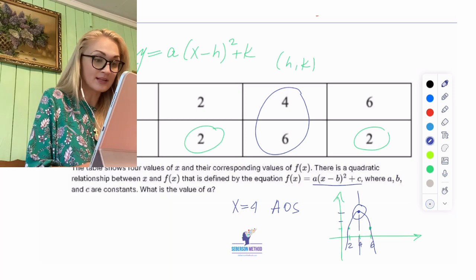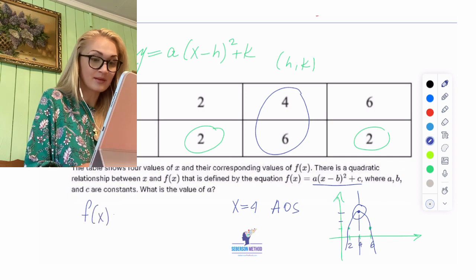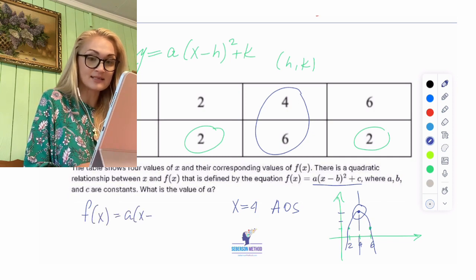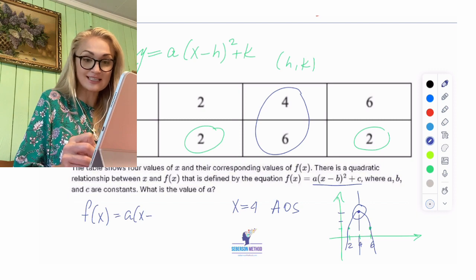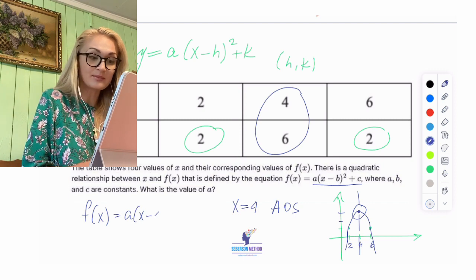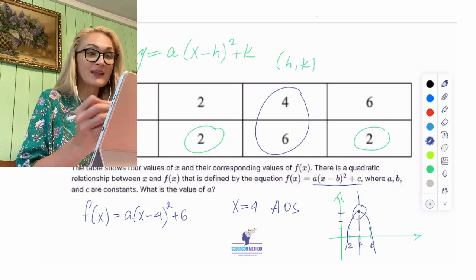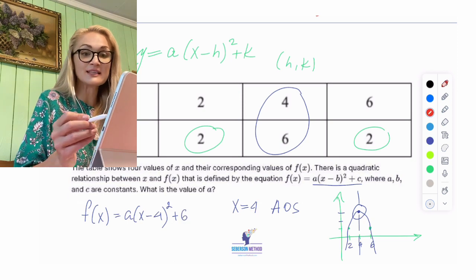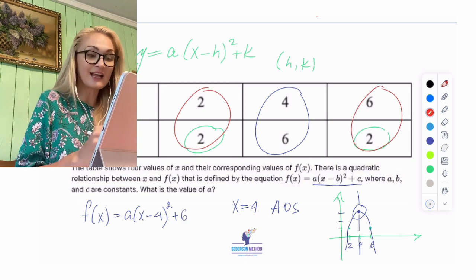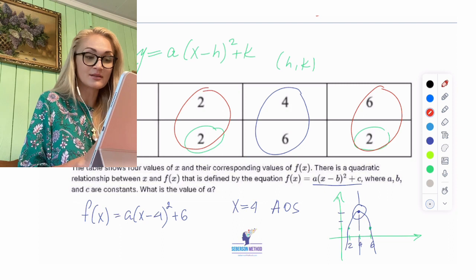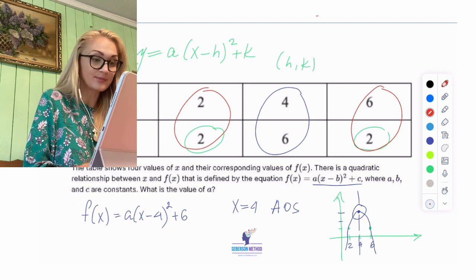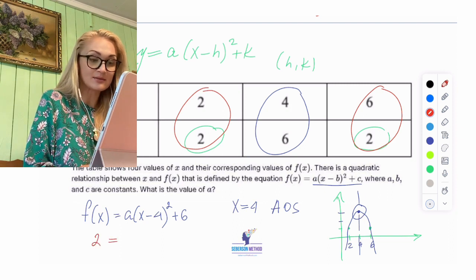So I can rewrite this as f(x) equals a(x minus 4) squared plus 6 — my x-coordinate of the vertex is 4, and because it's inside of the parentheses, I say minus 4, squared plus 6. Now I'm given all of these additional points that could help me figure out a. So I'll just plug in (2, 2).